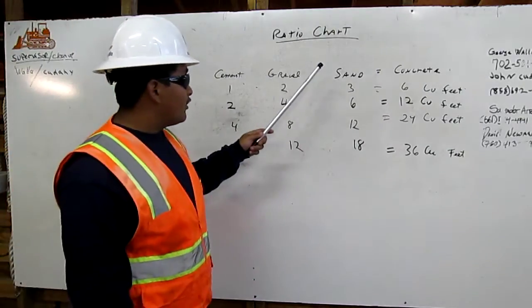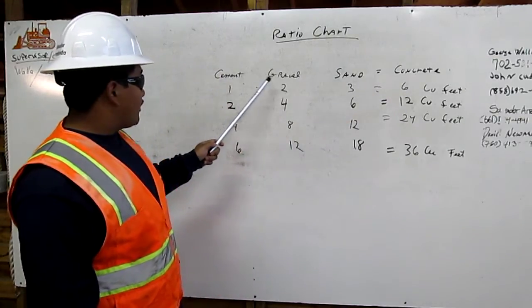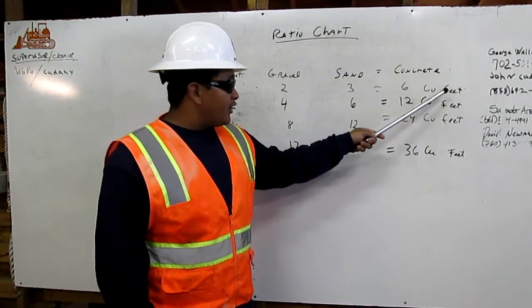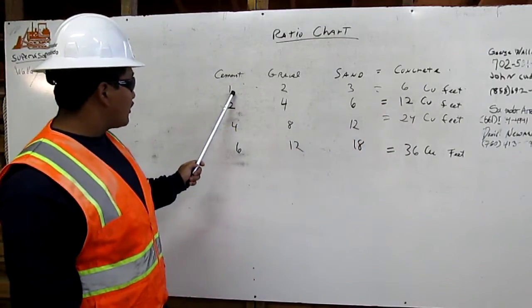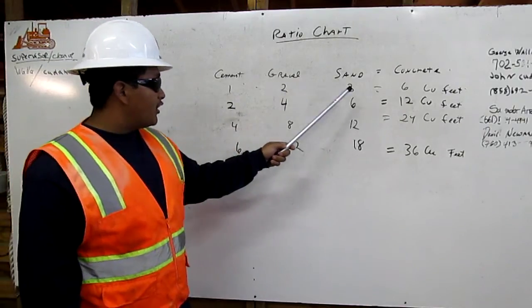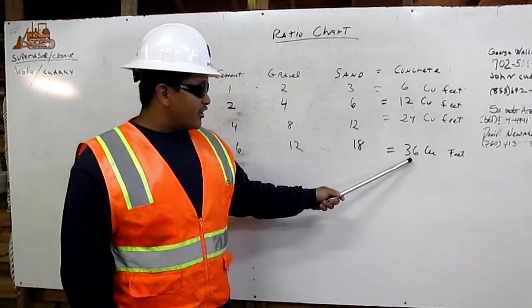Here's my ratio chart. In order to get concrete, I need cement, gravel, and sand. To get 6 cubic feet of concrete, I need 1 cubic foot of cement, 2 cubic feet of gravel, and 3 cubic feet of sand.